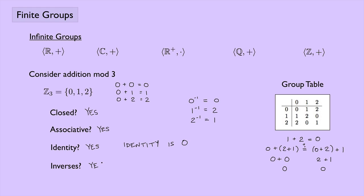Since we have all four properties, we can say this is a group. And in fact, it is a group that is finite — there are only three elements here, as opposed to the infinite groups we looked at earlier, which have an infinite number of elements in the set.